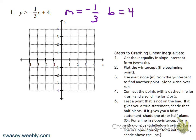Just like with equations, we'll plot our y-intercept first. Begin at four, then go down one and to the right three. We connect the points with a dashed line if the inequality doesn't include 'or equal to,' and a solid line if it does. So this one is a dashed line.